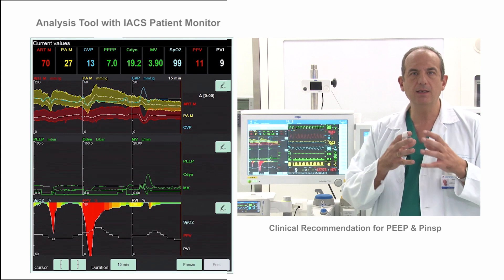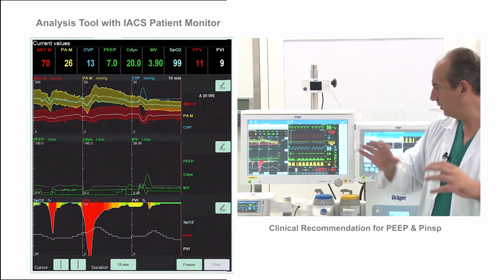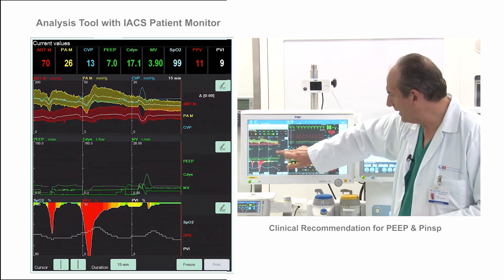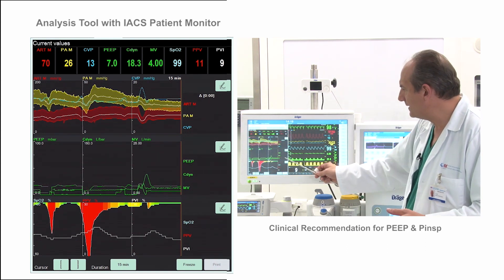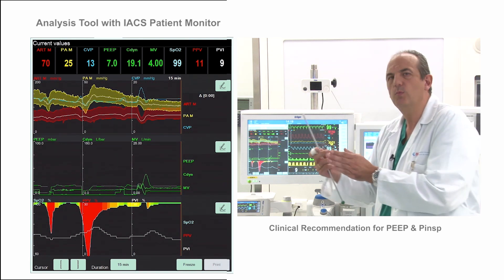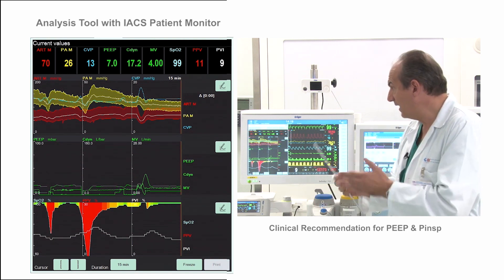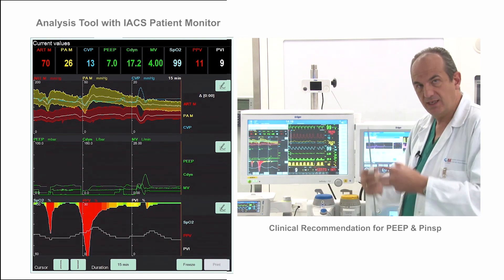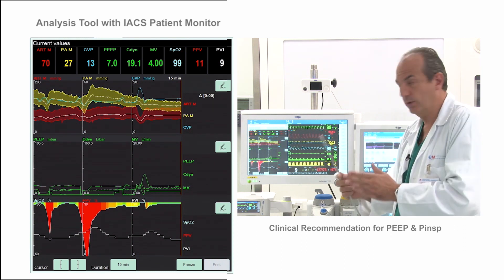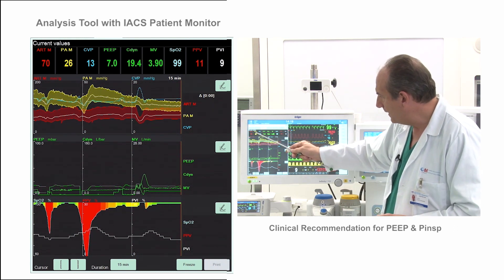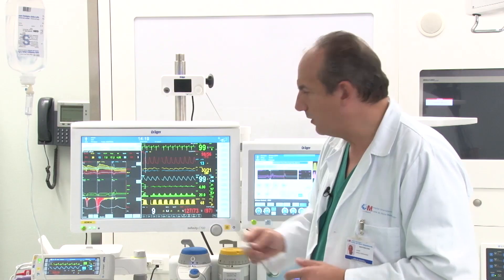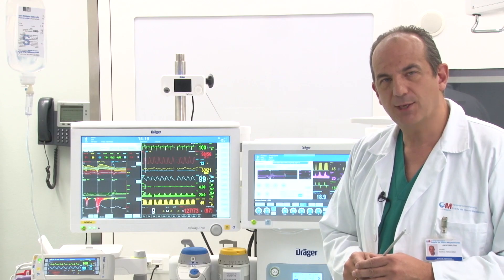Coming back to the beginning — see how important it is to have all the tools at the same time. Because if I only have dynamic compliance and PIP, I can fix everything from the pulmonary side, what is beneficial for the lungs. But now, having all these tools at the same time, breath by breath, I can take the best decision for both sides: for the pulmonary resistance, for the pulmonary artery, for the blood pressure, and for the lungs. Thank you.